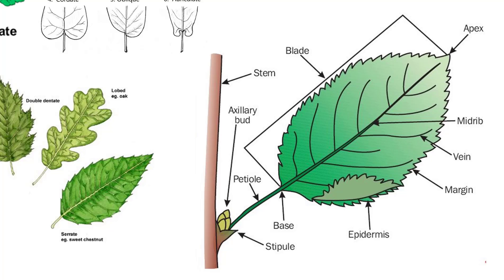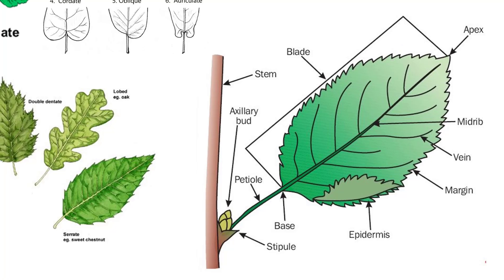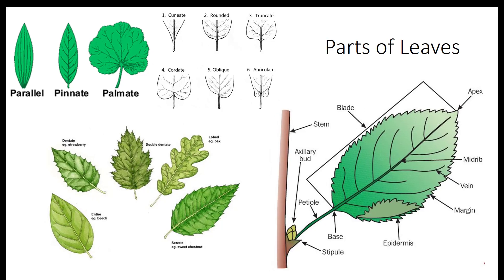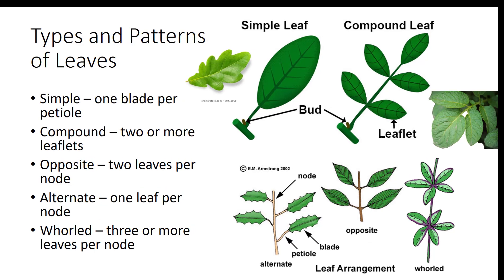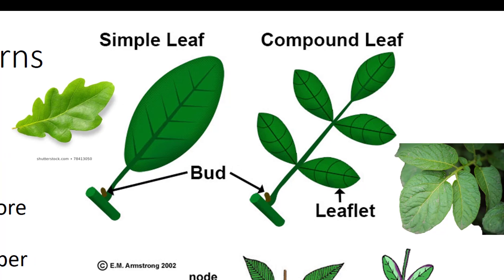A stipule is a small leaf-like appendage to a leaf, typically born in pairs at the base of the leaf stalk. Various leaf coverings include hairy versus not-hairy, waxy versus not-waxy, and others. The simple leaf consists of one blade, such as found on an oak leaf. The compound leaf has two or more leaflets, such as found on a potato leaf. The main difference between a leaf and a leaflet is the position of the axillary bud, which is located at the base of the entire leaf. Leaflets do not have axillary buds.